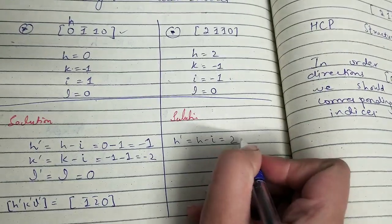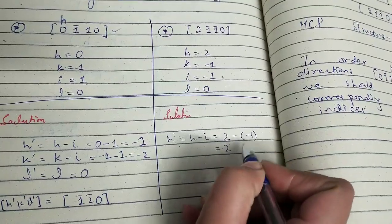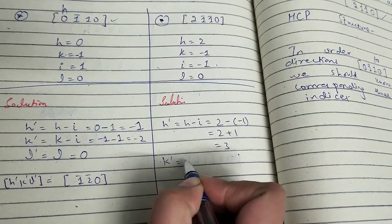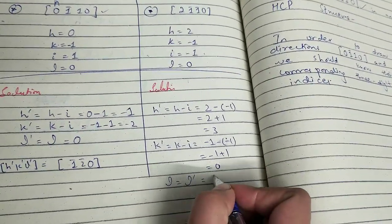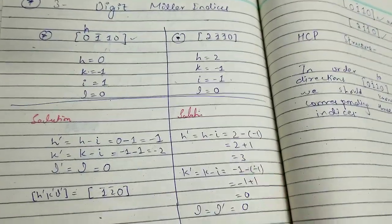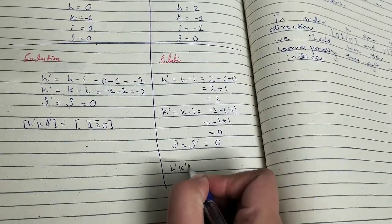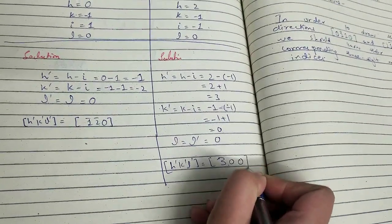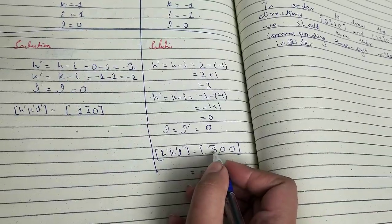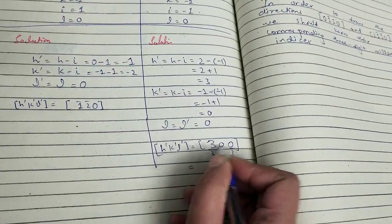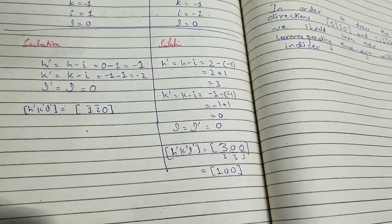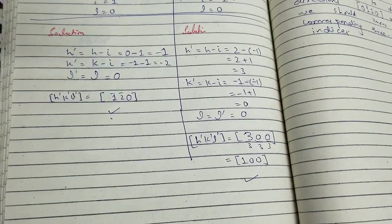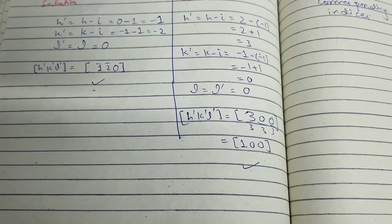For the second direction [2 1̄ 1̄ 0]: h′ = h − i = 2 − (−1) = 3; k′ = k − i = −1 − (−1) = 0; and l′ = l = 0. So h′k′l′ = [3 0 0]. This can be reduced further by dividing all three numbers by their LCM, which is 3, giving [1 0 0]. This cannot be reduced further, so the three-digit Miller indices are [1 0 0].